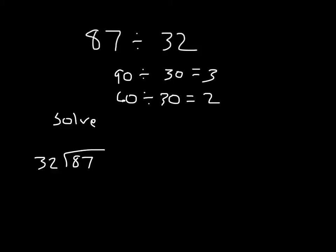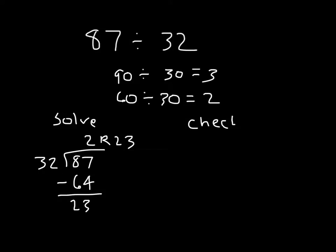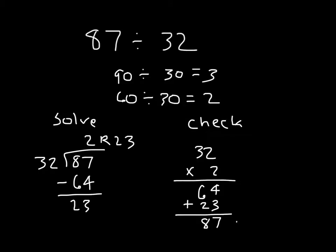87 divided by 32 — we think our estimate should be 2. 2 times 32 is 64. 87 minus 64 is 23. So 23 is lower than 32; we could not make another group of 32 with that 23, so that's a valid remainder. For our check, we take our answer of 2 and multiply it back by 32: 2 times 2 is 4, 2 times 3 is 6, giving us 64. We add back in our remainder and we do get 87.